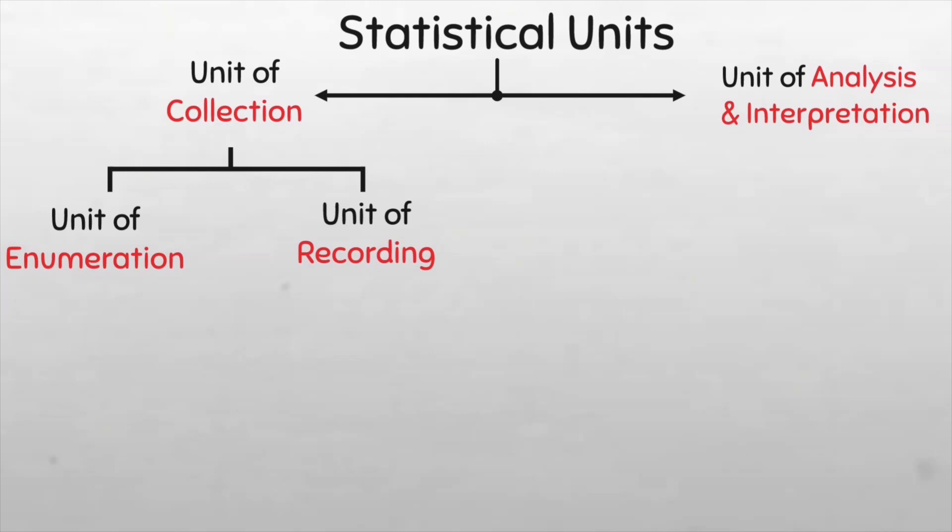As for the unit of recording, it refers to the level at which data is recorded or collected. Think of this in terms of variables. So for example, if in a survey we record the total income of households, what is being recorded is the income, say in Naira. So the unit of recording is the income of each household in Naira.